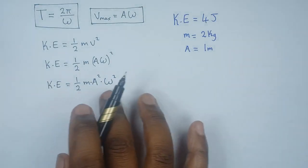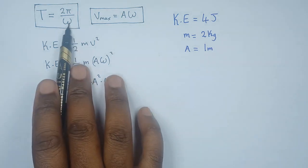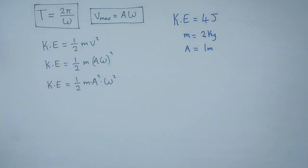From everything that we have here, we just want to find the value of omega so that we can go and replace it there, hence we can find the period.